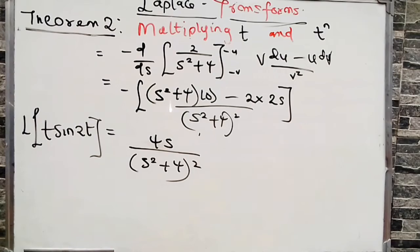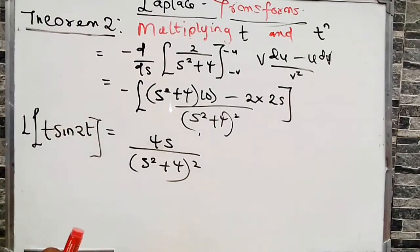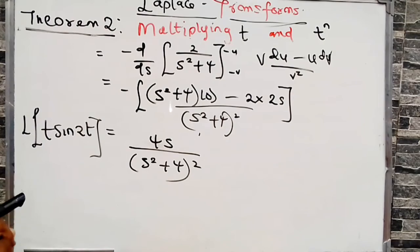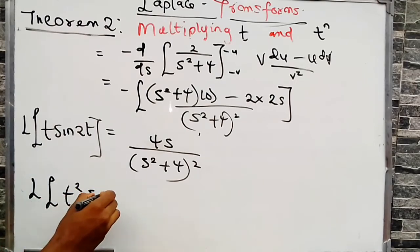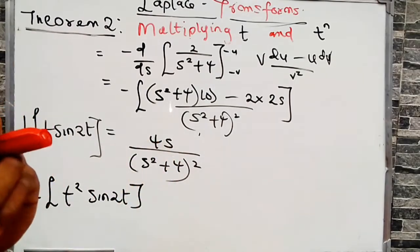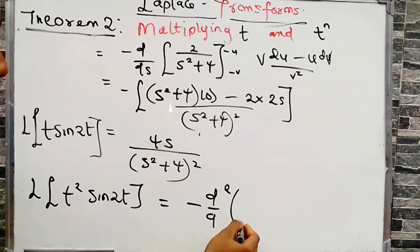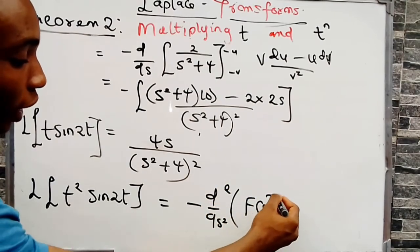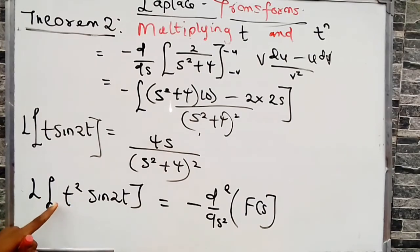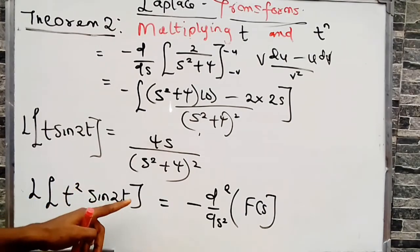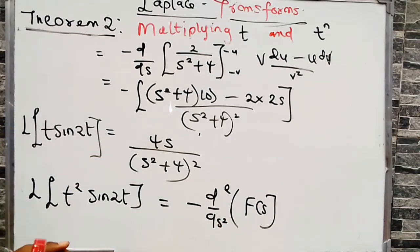To summarize the steps: first, identify t and f(t) by comparison. Second, find the Laplace of f(t). Third, differentiate that result and multiply by minus 1 — that's your answer. For t² times a function, you take the second-order negative derivative of F(s). For t³ times any function, the same process applies with a third-order derivative. Thank you for watching, please subscribe.